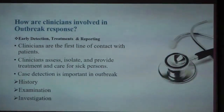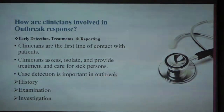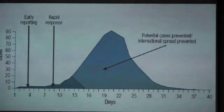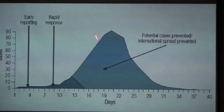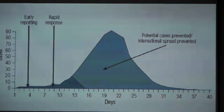Sometimes you need to isolate the patient, provide care, treat the patient, and perform the proper examination. For certain cases, you should do laboratory investigations. Based on literature and research evidence, if you respond early to the case during the outbreak, you can prevent a significant number of potential cases. If you treat early and respond early — detect the patient, report the patient, all cases as early as possible — you can reduce the number of potential cases.